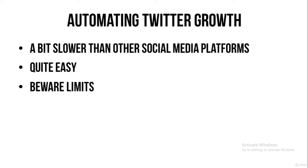What we're going to be talking about is automating Twitter growth. Now, there are a few things you have to know about Twitter. It's a bit slower than the other social media platforms — it grows a bit slower. But on the other hand, it's quite easy.